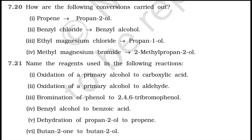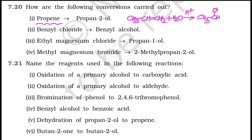How are the following conversions carried out: NCERT alcohol, phenol, ethers. Propane to propanol — the easiest conversion. Propene is CH3-CH=CH2. To get propanol, just add water in the presence of acid. By Markovnikov's rule of addition, you get OH at the second position — propan-2-ol. Very, very simple.